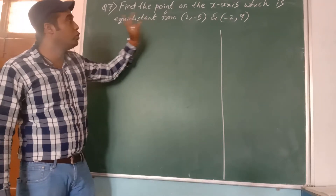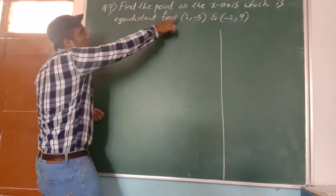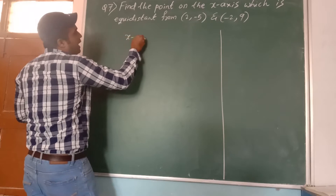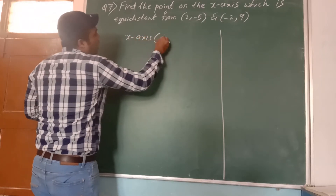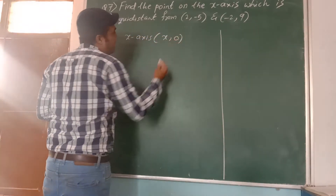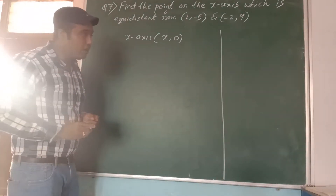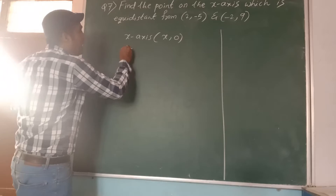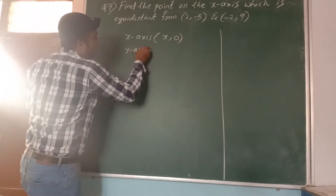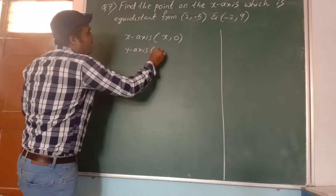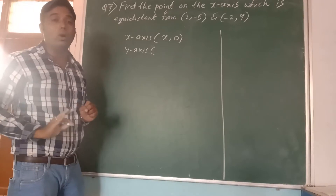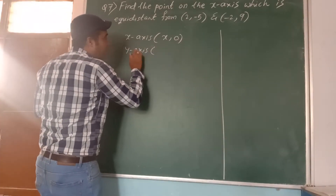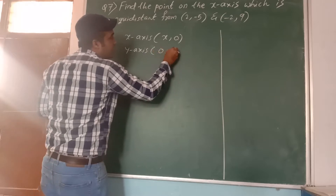What is the question? Find the point on the x-axis. When the point on the x-axis is given to you, you must take the pair of points as (x, 0). Similarly, sometimes they will ask you to find the point on the y-axis. If they ask y-axis, you must take (0, y).